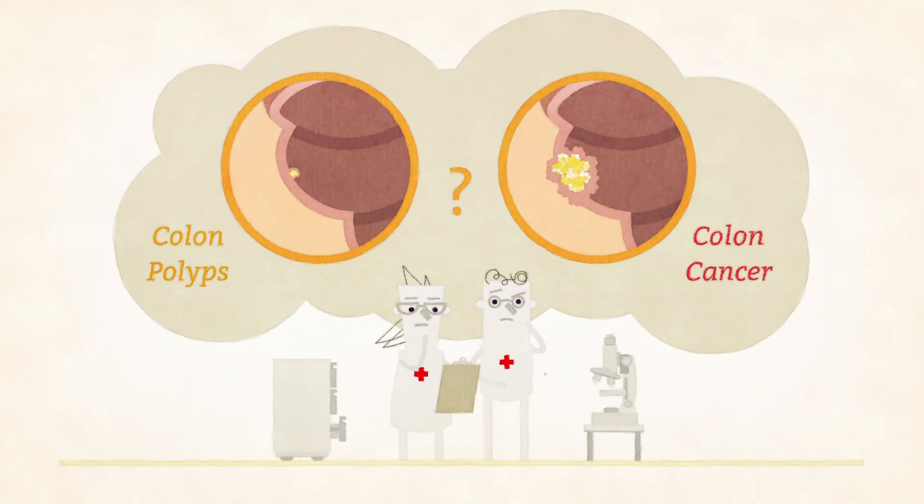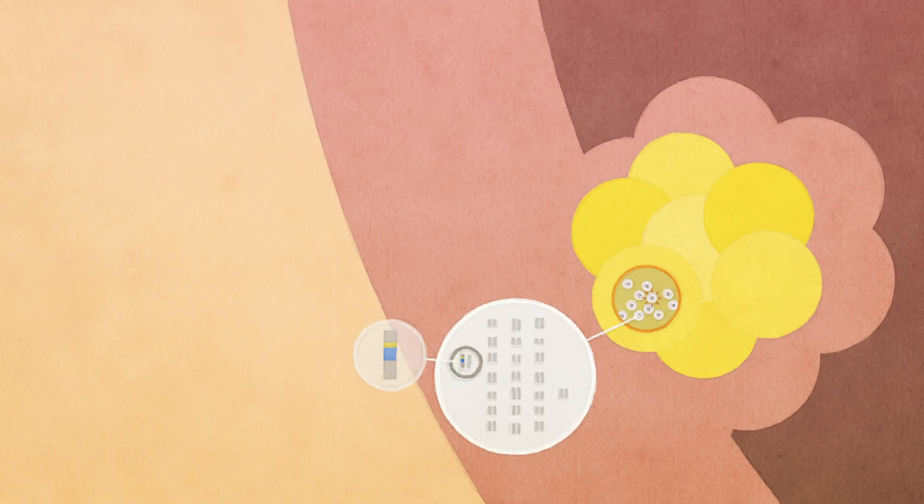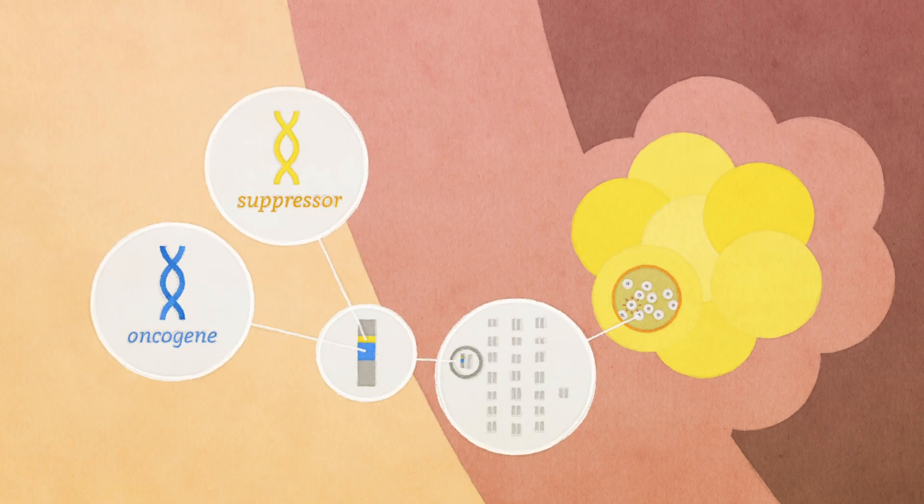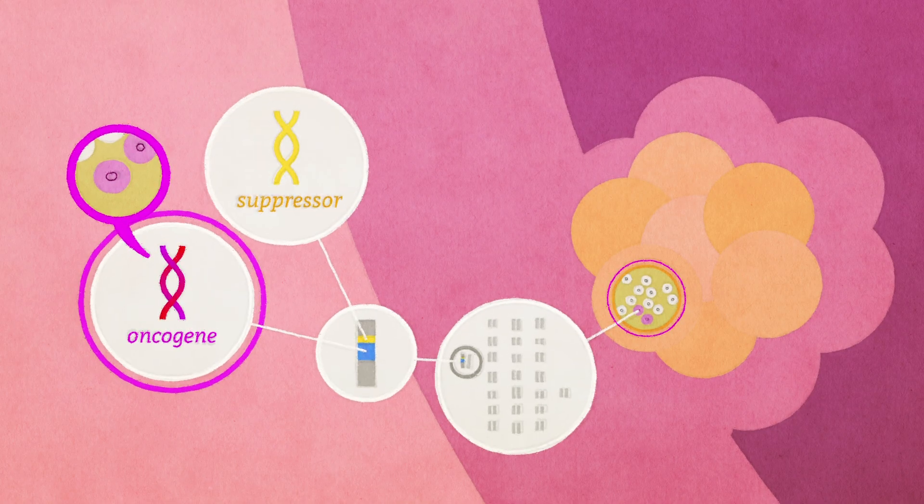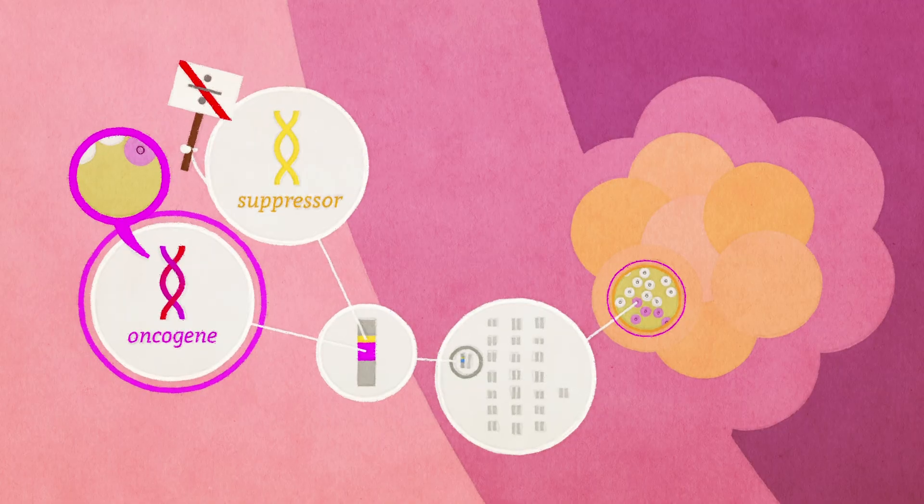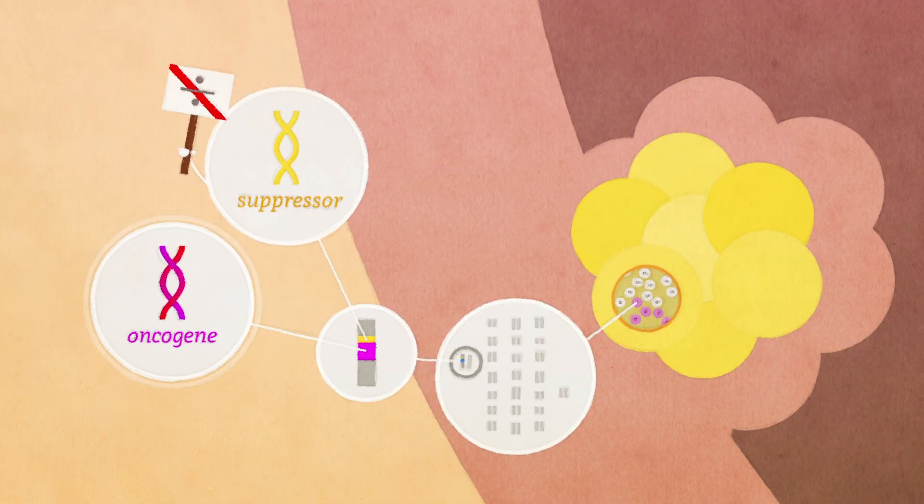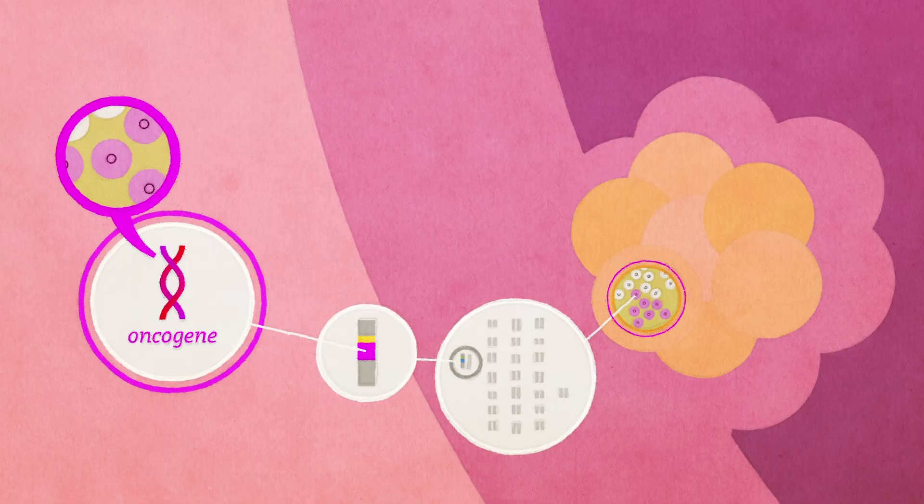We don't know exactly what causes the majority of colon polyps and colon cancers. We do know in general that colon cancer involves the activation of what's called oncogenes in the polyp, and/or the loss of tumor suppressor genes that usually keep cancer cells in check.